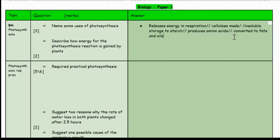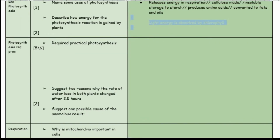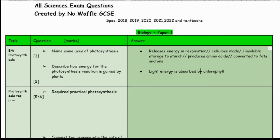Photosynthesis releases energy in respiration, cellulose is made from the products of it, and there is insoluble storage of starch. It can also be used to produce amino acids, and converts fats to oils and things like that. Question two: describe how energy for the photosynthesis reaction is gained by plants. It actually comes from light energy, which is absorbed via the chlorophyll from the Sun.